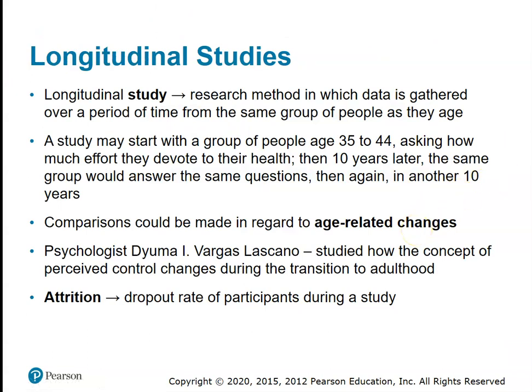Longitudinal studies would be similar, except with a longitudinal study we would take 60-year-olds, measure them, then measure them four years later, all the way up until they're 90. But that would take 30 years to get the results the cross-sectional study gave us quickly. So why would we ever do longitudinal studies? The problem with cross-sectional studies is we're making a big assumption that the differences between 60-year-olds and 90-year-olds are related to age and nothing else.